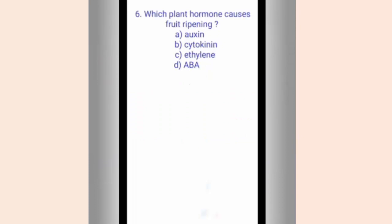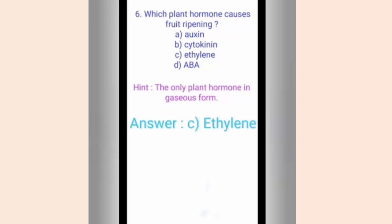Question six. Which plant hormone causes fruit ripening? Options are A. Auxin, B. Cytokinin, C. Ethylene, D. ABA. The hint is it is the only plant hormone in gaseous form. The correct answer is option C, Ethylene. Ethylene is the only gaseous hormone in plants. Ethylene helps in artificial ripening of fruits like apple, banana, mango, etc.